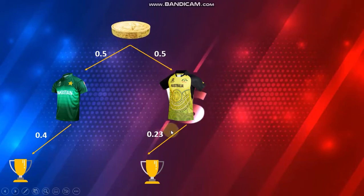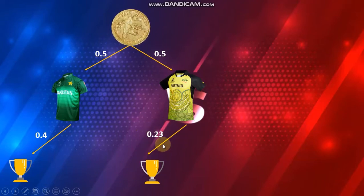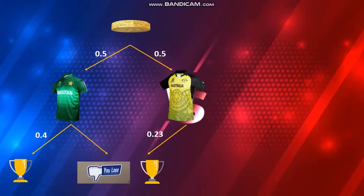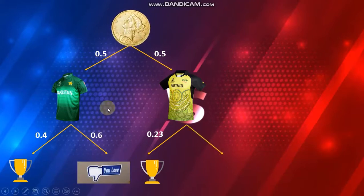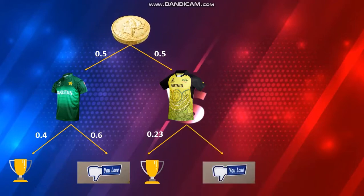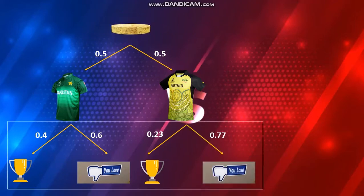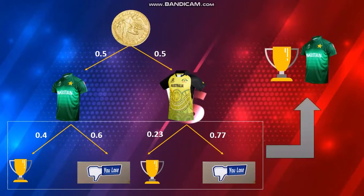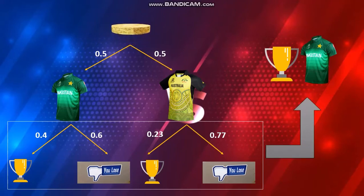If Pakistan wins the toss but loses the match, the probability of losing in that case is 0.6. Similarly, if Pakistan loses the toss and also loses the match, the probability is 0.77. All of these probabilities relate to Pakistan's winning or losing the match. This is the actual tree diagram.